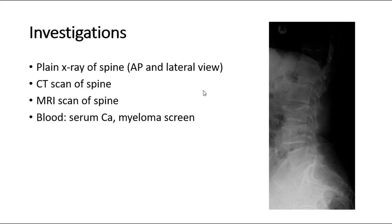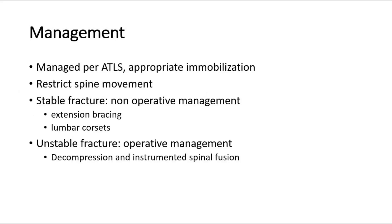For management, patients with a suspected thoracolumbar fracture must be managed as per ATLS guidance, including appropriate immobilization. Restricting movement of the spine is recommended to prevent damage to the spinal cord. Non-operative management is often indicated in the more stable thoracolumbar fractures, with options including extension bracing and lumbar corsets. Operative management usually involves decompression and instrumented spinal fusion.